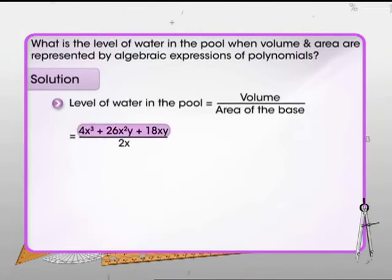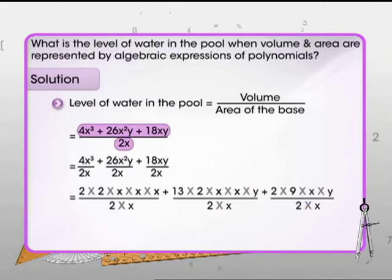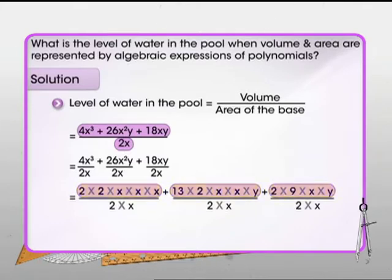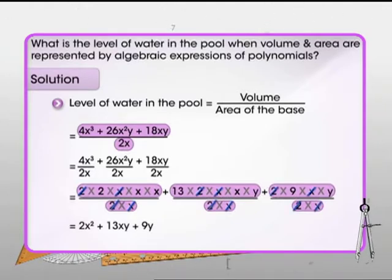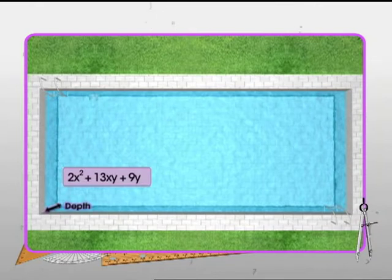We see that it involves the division of a polynomial by a monomial. One way to carry out this division is to divide each term of polynomial in the numerator by the monomial in the denominator. This will involve the cancellation of common factors. Solving each division leads us to the desired answer. We get the level of water in the pool as 2x squared plus 13xy plus 9y.